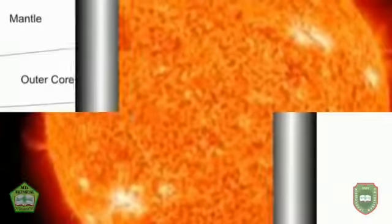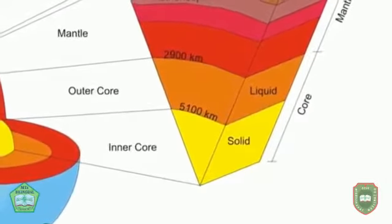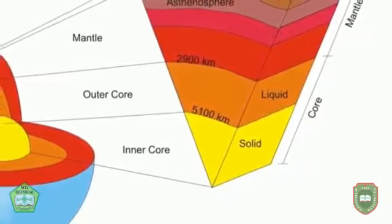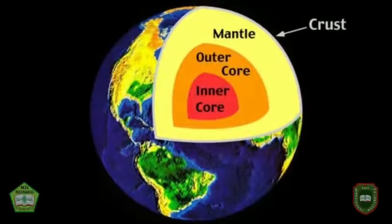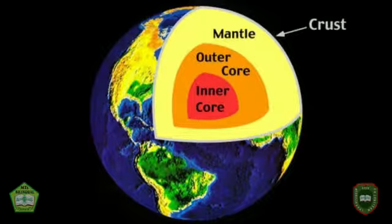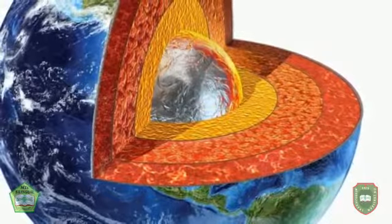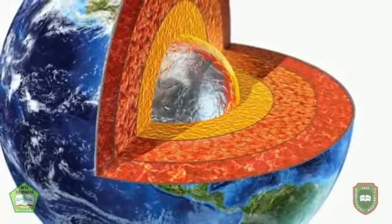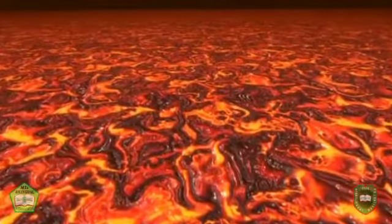The mantle of the Earth is a layer that is between the Earth's crust and the core of the Earth. The Earth's mantle is the largest layer of the Earth. The outer core is located between a depth of 2,900 km to 5,100 km and is composed of solid metal. The inner core is located between the depth of 5,100 km to the center of the Earth and is composed of molten metal.